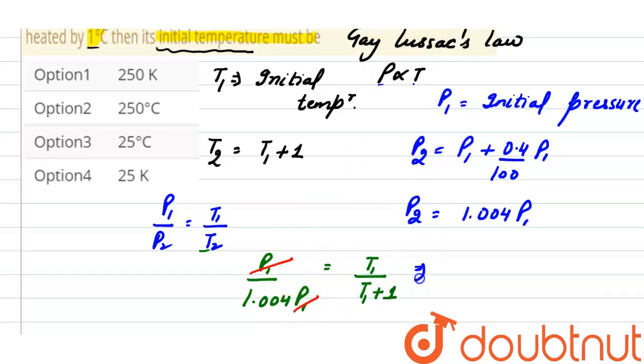And from here, T1 plus 1 equals 1.004 T1. And from here, temperature, initial temperature of the system